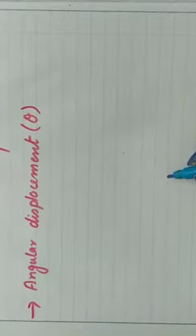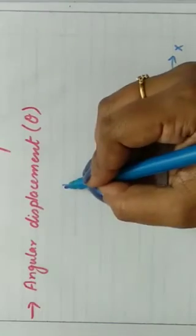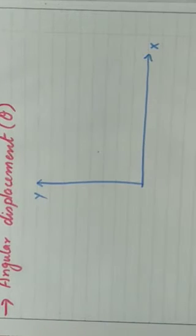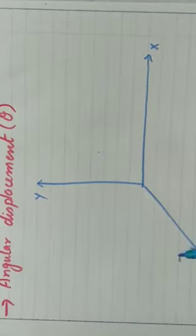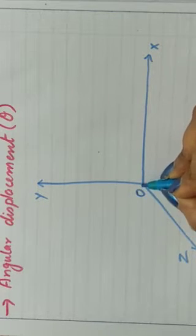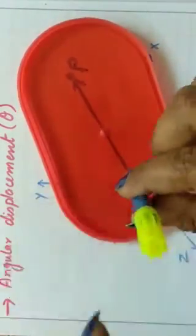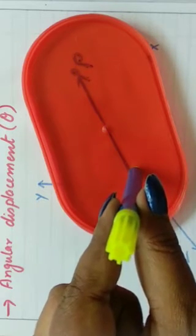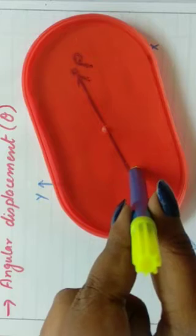Suppose we have the x-axis, the y-axis, and the z-axis coming out of this page. So this is our z-axis which is coming out of the plane of this page. Now suppose we have a rigid body rotating about the OZ axis. This is the origin, and this is the z-axis. This was x-axis, this is y-axis, and this is z-axis coming out of this page. So this body is rotating about the z-axis.